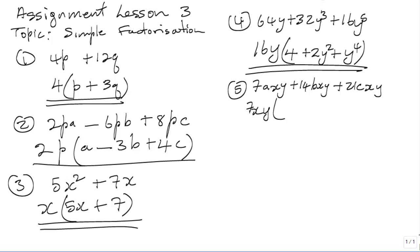7XY into 7AXY is A. Plus, 7XY into 14BXY: 7 into 14 is 2, X and Y cancel out, so we are left with 2B. Plus, 7XY into 21CXY is 3C, because 7 into 21 is 3, X and Y cancel out. So the factors for this one is 7XY times A plus 2B plus 3C. We have factorized that one completely.